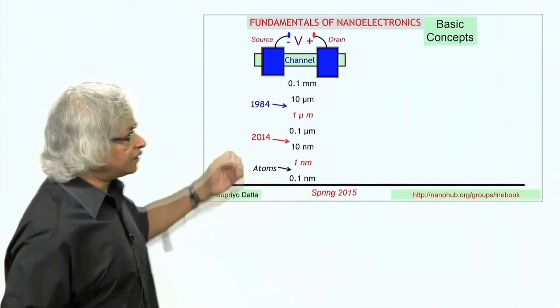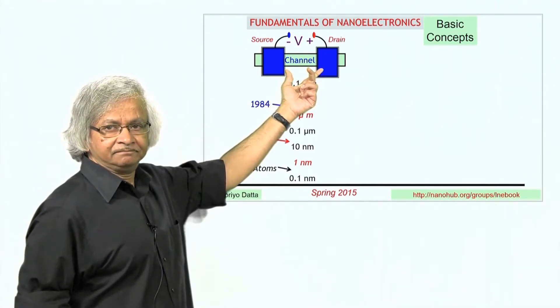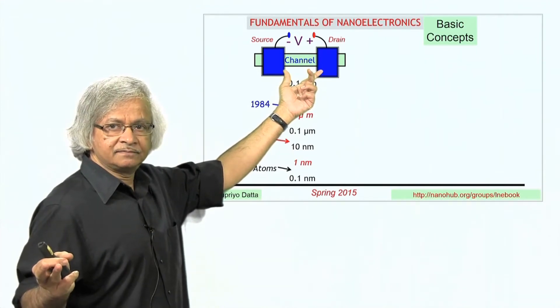So if you look at today's transistors and you looked at the active region, it's like a few hundred atoms across.